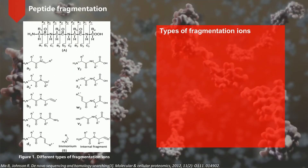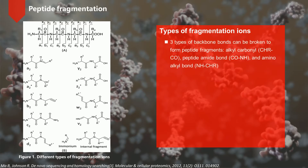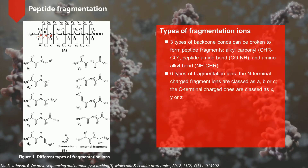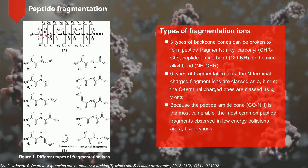In a tandem mass spectrometer, the peptide is fragmented along the peptide backbone and the resulting fragment ions are measured to produce spectra. There are three ways to break bonds to form peptide fragments: alkylcarbonyl, peptide amide bond, and aminoalkyl bond. Therefore, it can form six types of fragmentation ions, including the N-terminal charged fragment ions classed as A, B, or C, and the C-terminal charged ones classed as X, Y, or Z. Because the peptide amide bond is the most vulnerable, the most common peptide fragments observed in low-energy collisions are A, B, and Y ions.